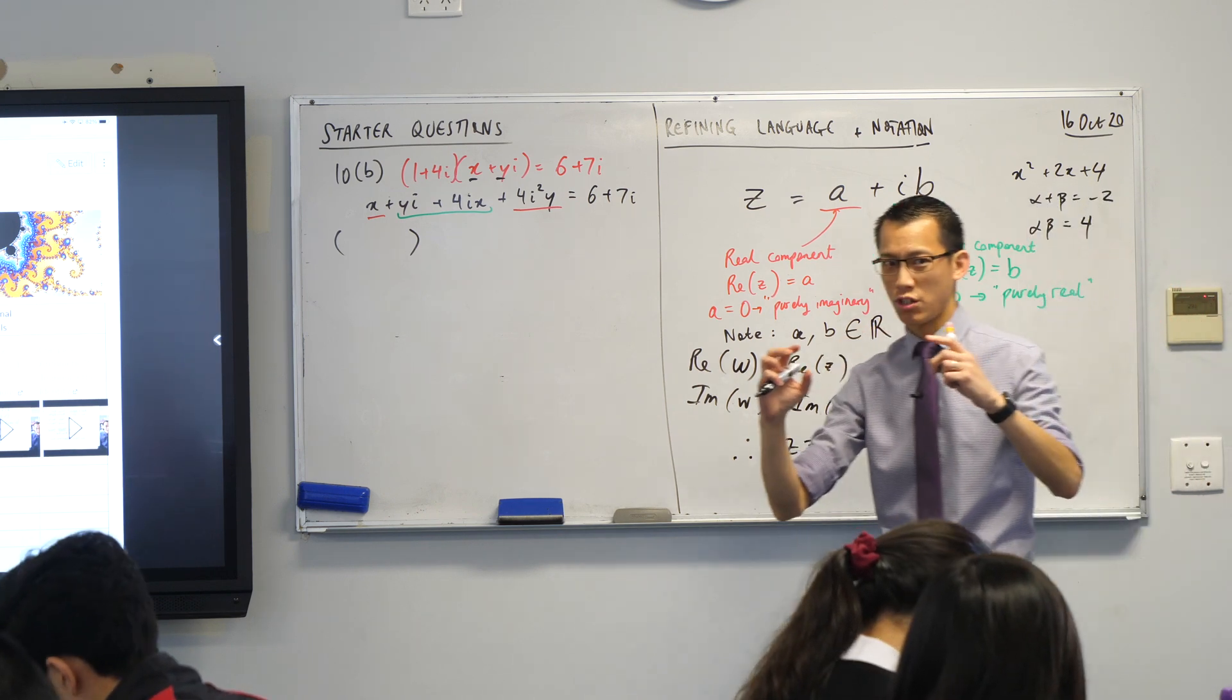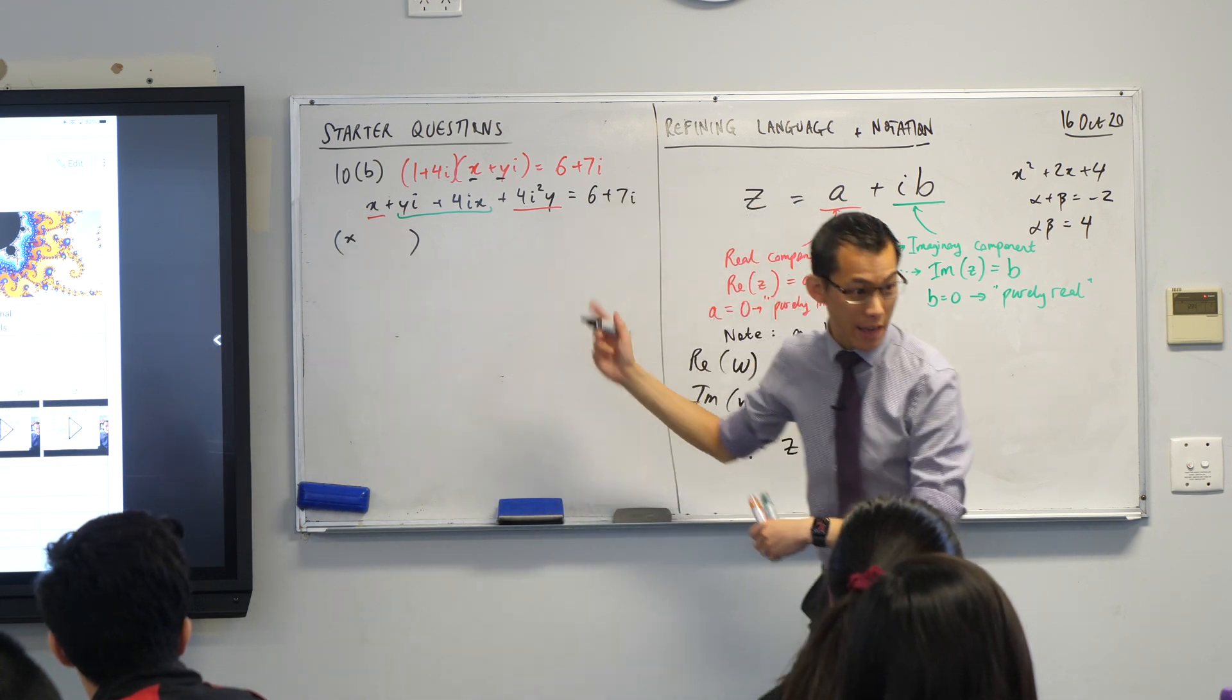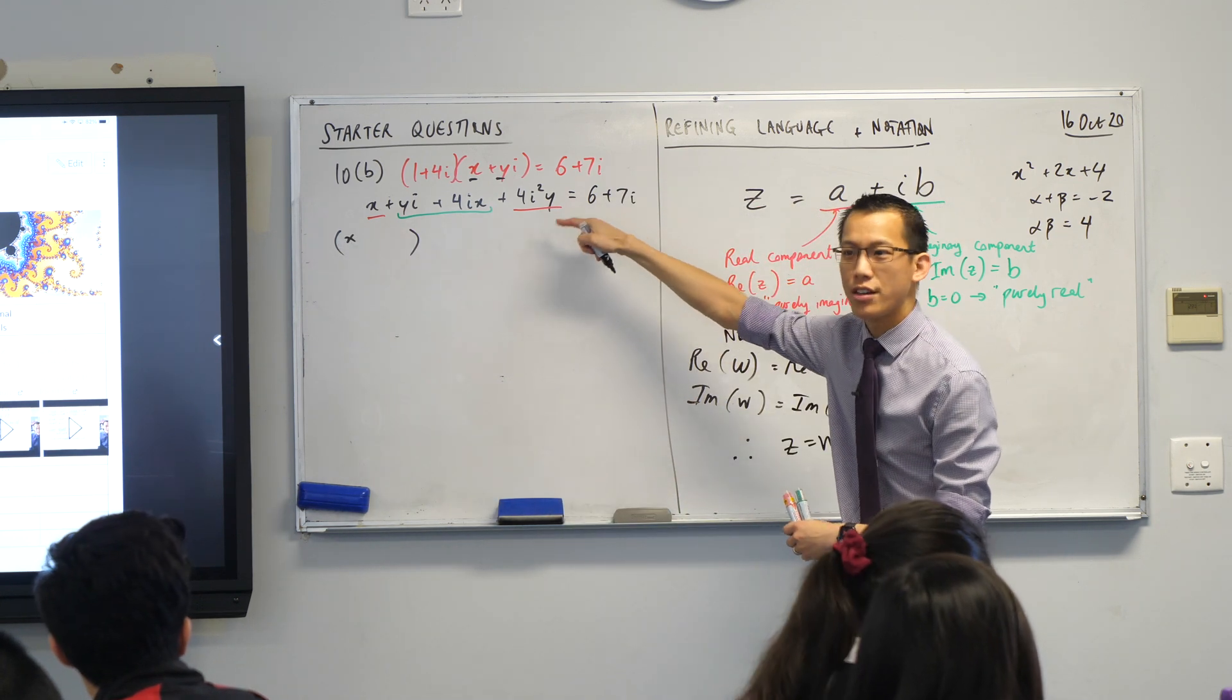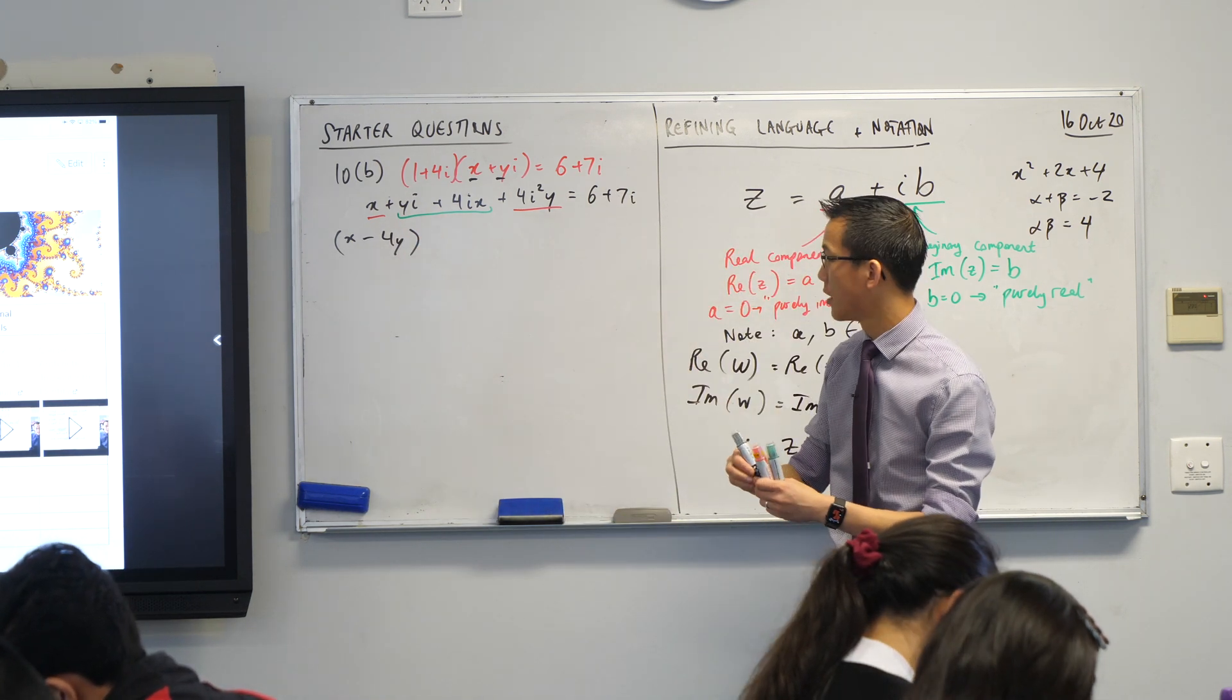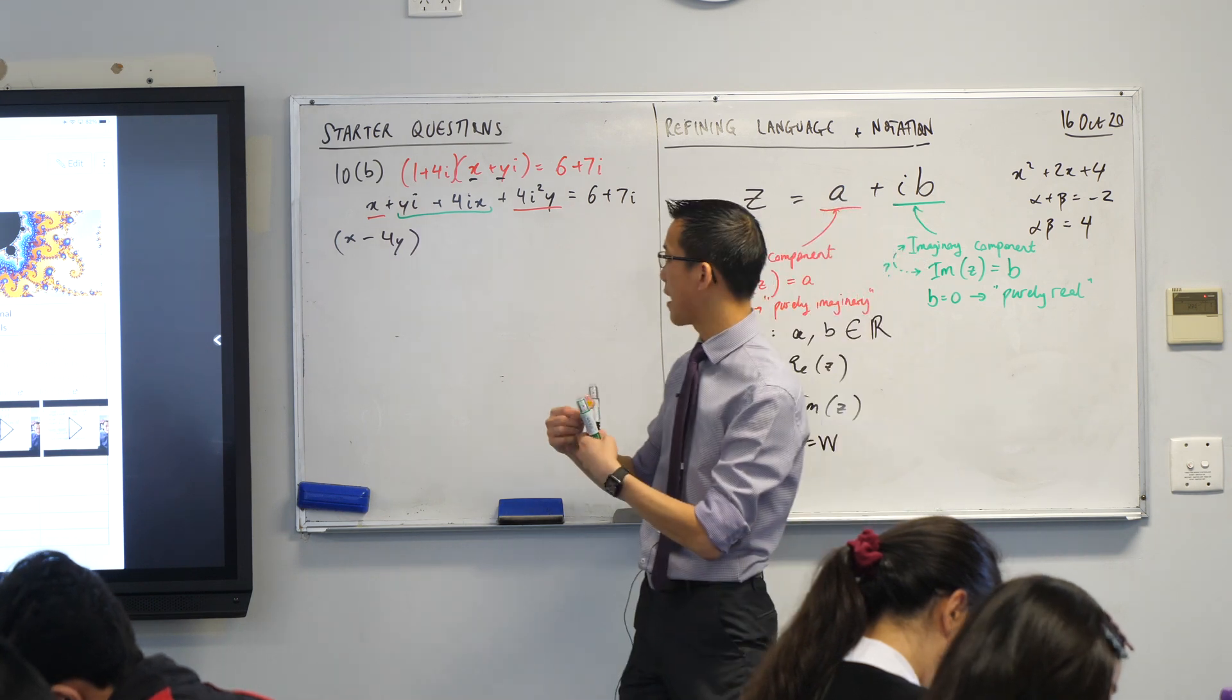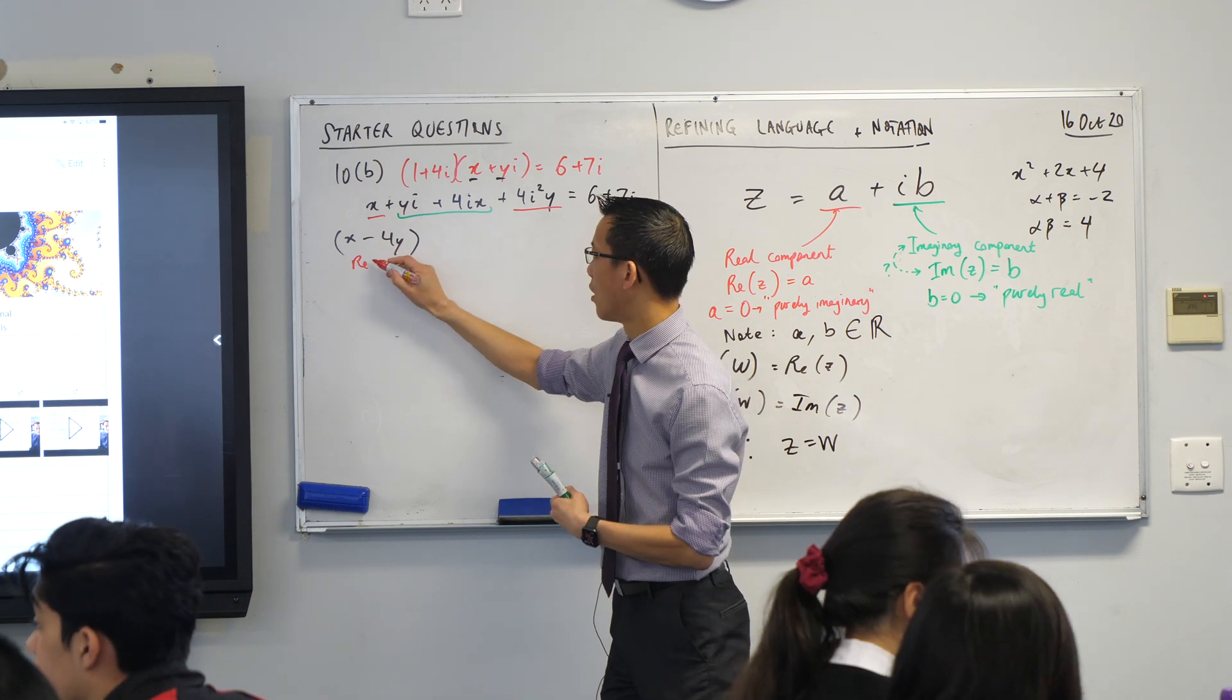So we said this i squared is going to be negative 1. So at the front here, and I'm going to, even though it's kind of unnecessary, but it's helping my brain, I'm going to put the real component in brackets. What's in the real component? What's the first thing? That's the easy one. It's just x. No change. Then the other bit is going to be minus 4y. There is the real component.